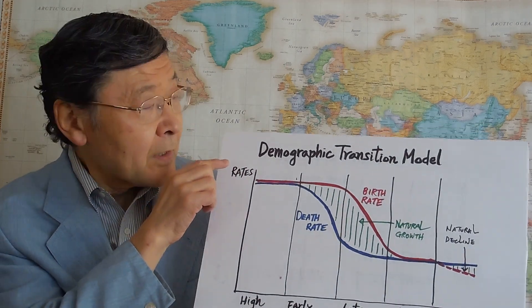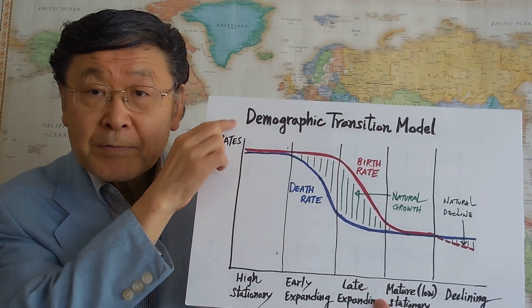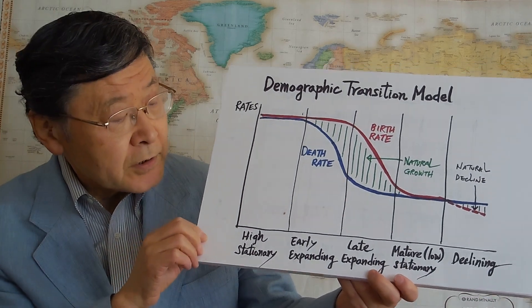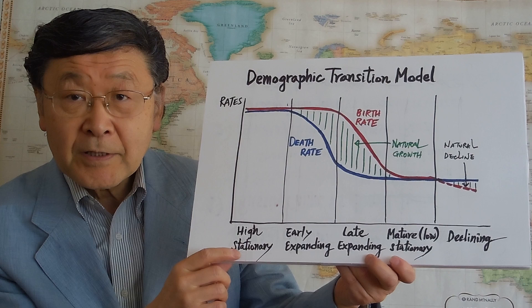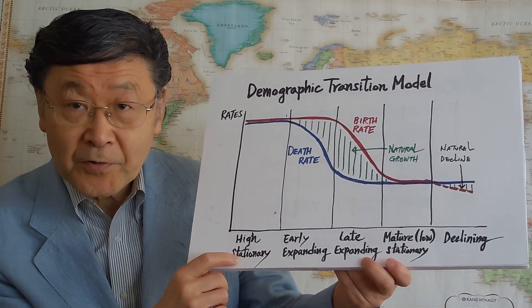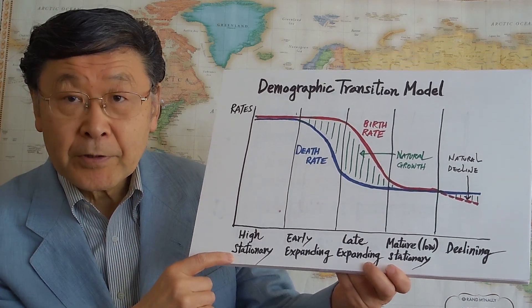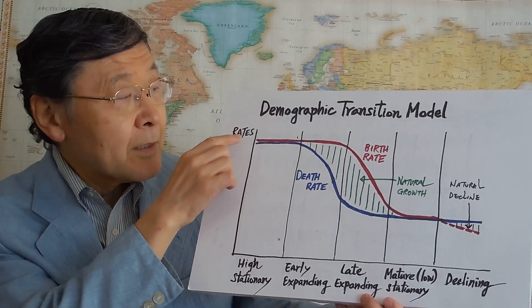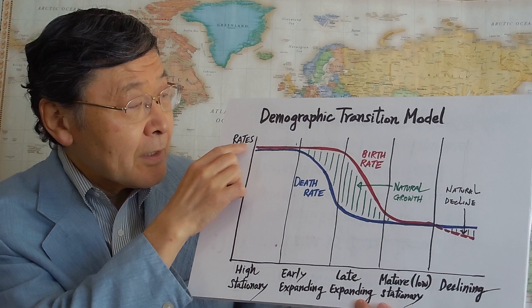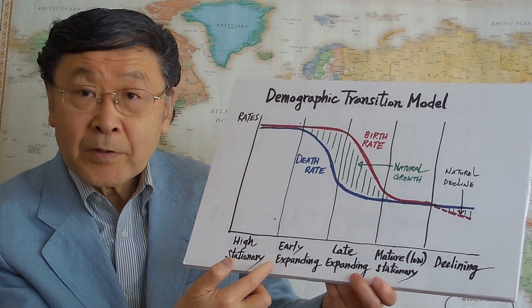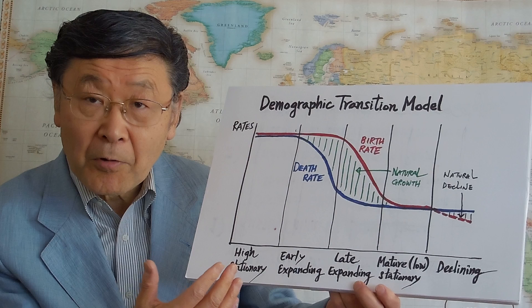With respect to population changes and economic development, let's look at the demographic transition model, which has been around for some time in the demography field. In the initial phase, before rapid economic development, the economy is in the high stationary period, meaning there are high rates of both birth and death, canceling each other out with no population growth.